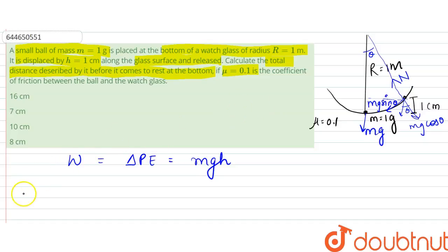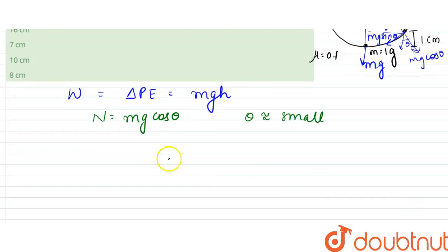So what we could say is that from here, the normal force is equal to mg cos theta. Since theta is very, very small, what we can say is that it would be equal to mg. For small theta, cos theta is almost equal to 1.